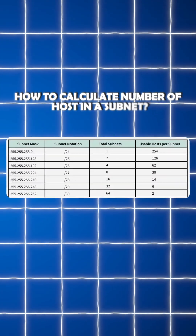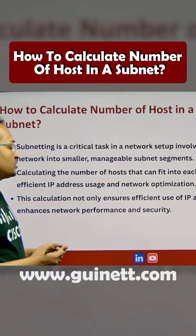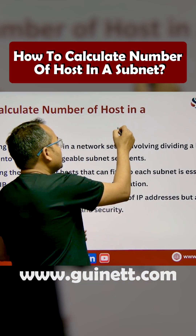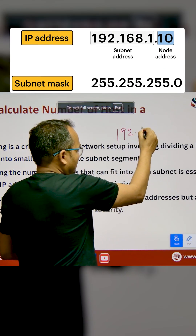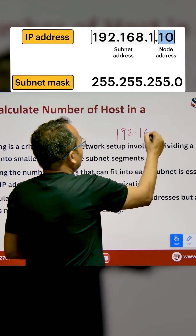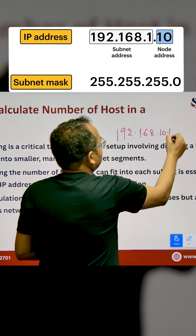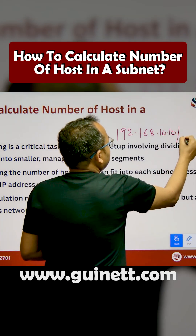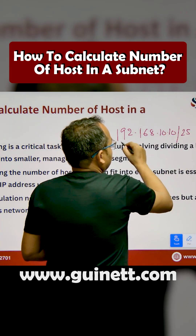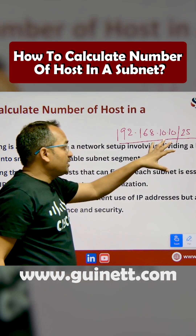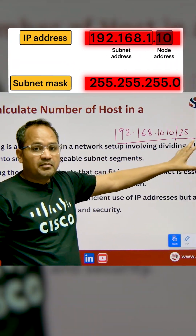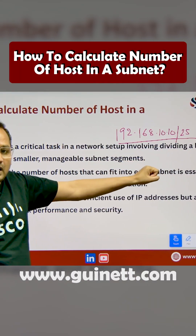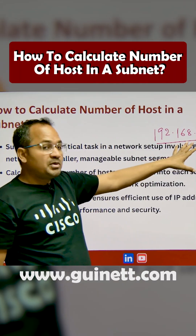How to calculate the number of hosts and the subnet from any IP address. So let's suppose this is one of the IP addresses: 192.168.10.10 with a slash 25. This is your IP address and this is your subnet mask.